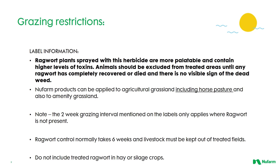Nuform products can be applied to agricultural grassland, including horse pastures, and also to amenity grassland. Note that the two-week grazing interval mentioned on labels only applies where ragwort is not present — you need to go longer than two weeks where ragwort is present. Ragwort control normally takes six weeks and livestock must be kept out of treated fields for that time period, though it is a judgment call based on your own situation. Do not include treated ragwort in hay or silage crops, as it could still be consumed and be toxic to animals.